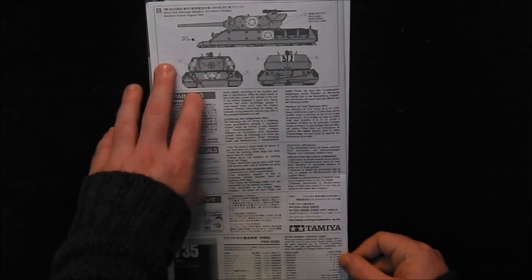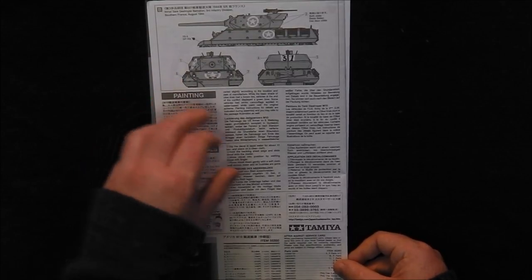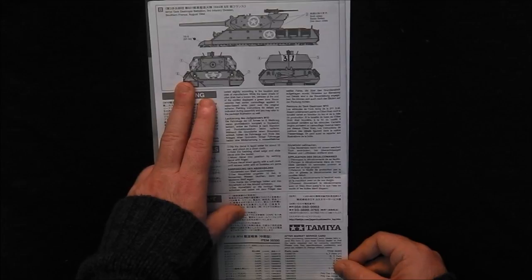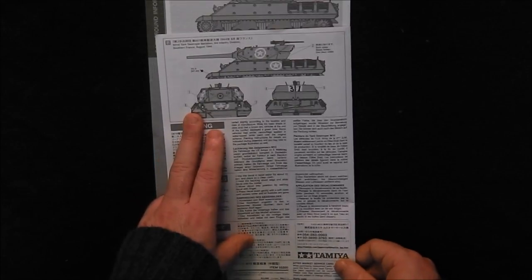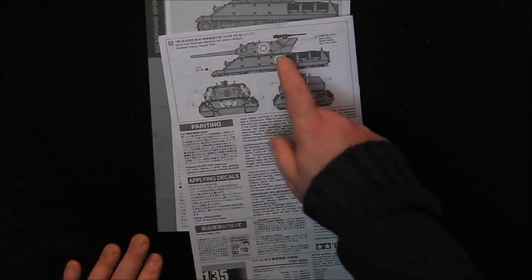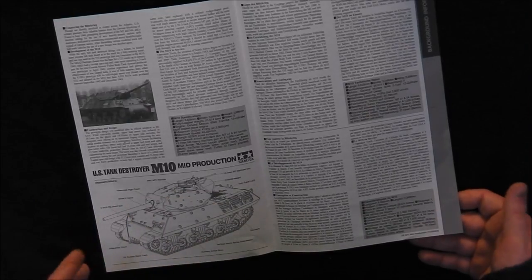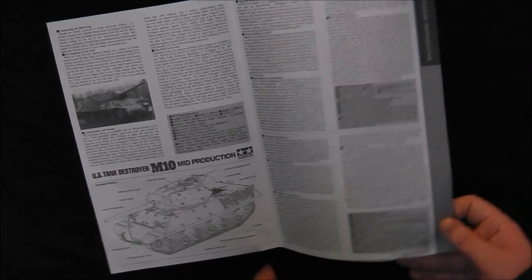Option B is 601st Tank Destroyer Battalion, 3rd Infantry Division, Southern France, August 1944. So this is Operation Dragoon, which is the invasion of Southern France. This is actually quite nice. I do like the tactical numbering on the rear of the counterbalances, which is a nice touch. They're very simple but these are solid instructions. Then we get an information pamphlet in several languages including English of course, and we just get a very brief overview of the vehicle, which is grand if you don't really know much about the M10, like me.